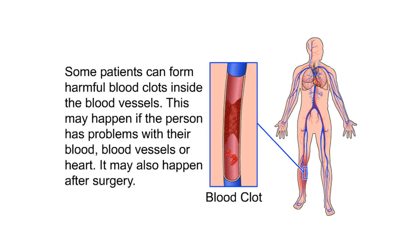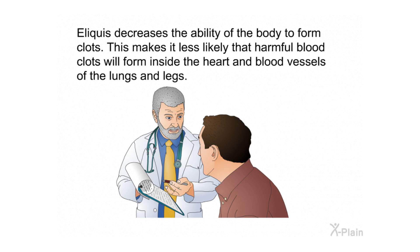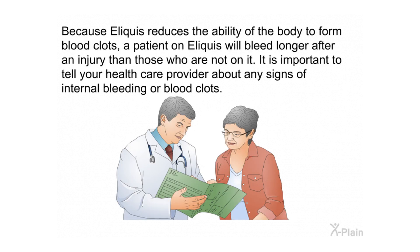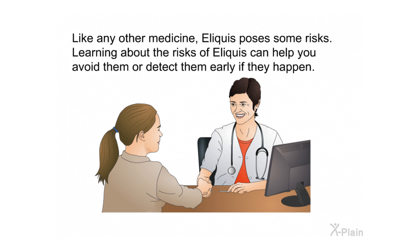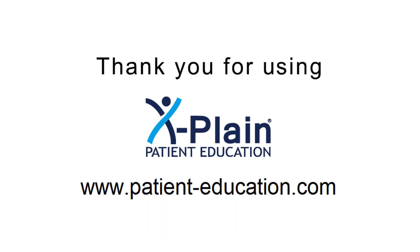In summary: some patients can form harmful blood clots inside the blood vessels due to problems with their blood, blood vessels, heart, or after surgery. Eliquis decreases the ability of the body to form clots, making it less likely that harmful clots will form in the heart and blood vessels of the lungs and legs, but it also means patients will bleed longer after an injury. Other medicines and supplements can affect how thin the blood is, so always check with your health care provider before taking any supplement or medication, including over-the-counter products. Like any medicine, Eliquis poses risks — learning about them can help you avoid or detect them early.